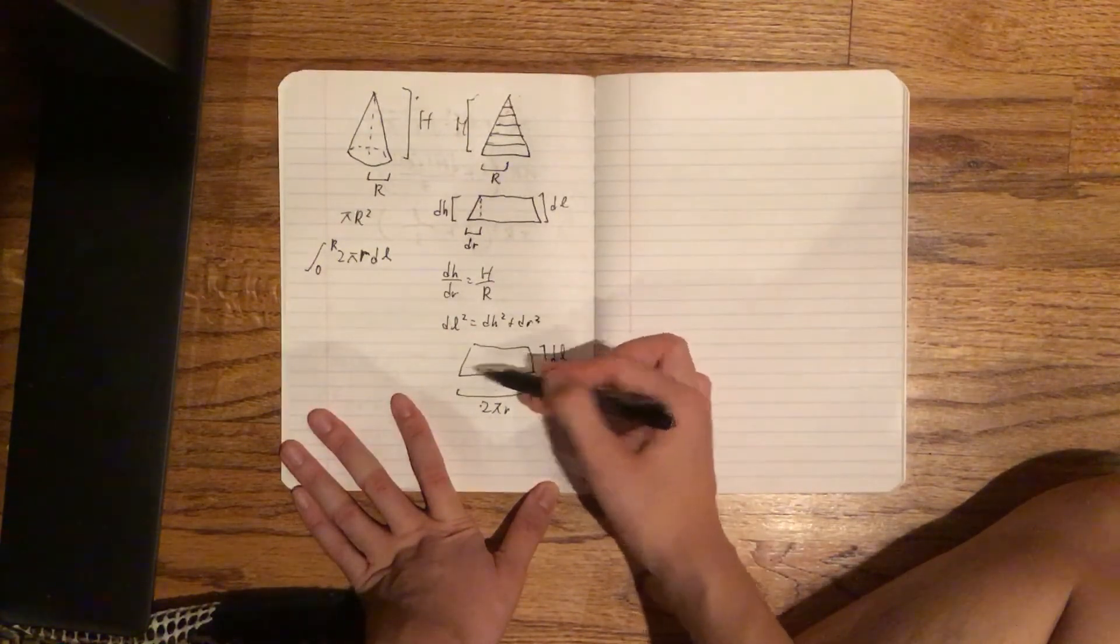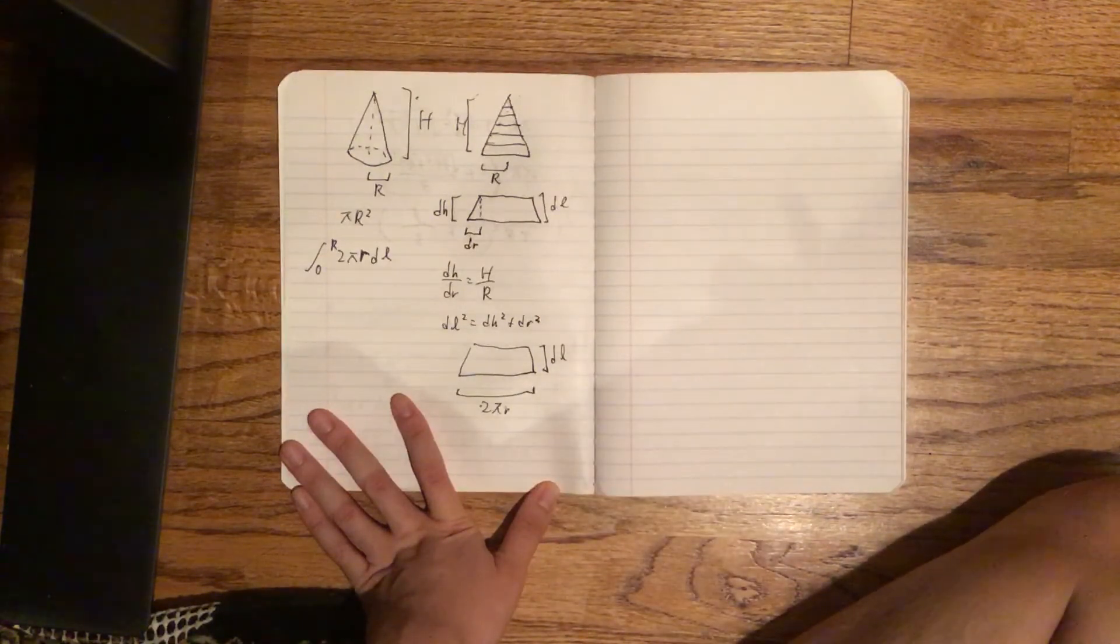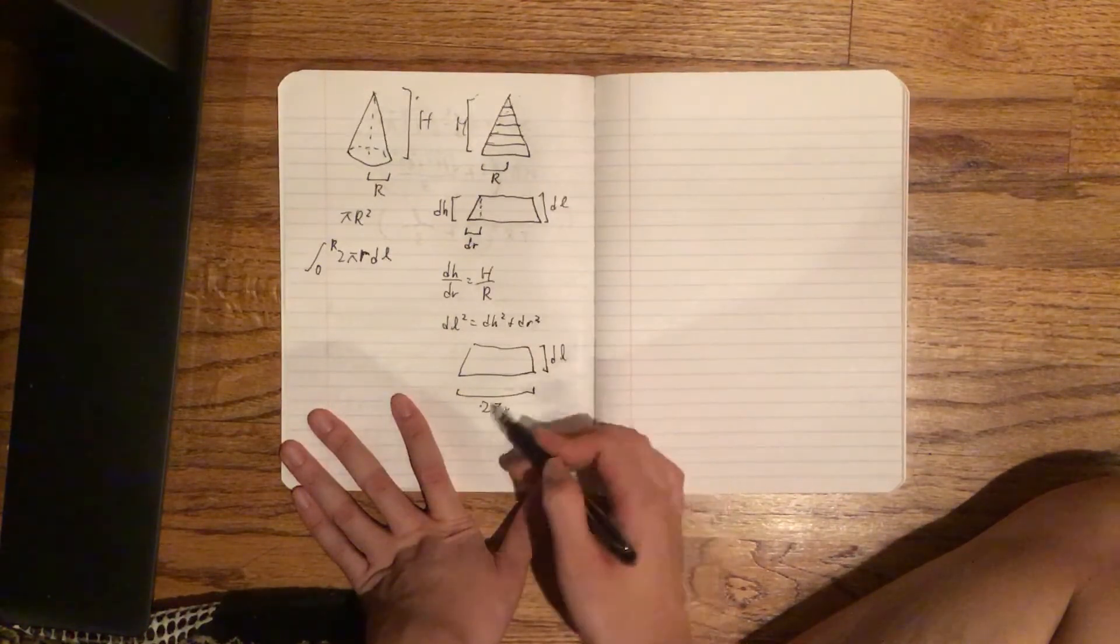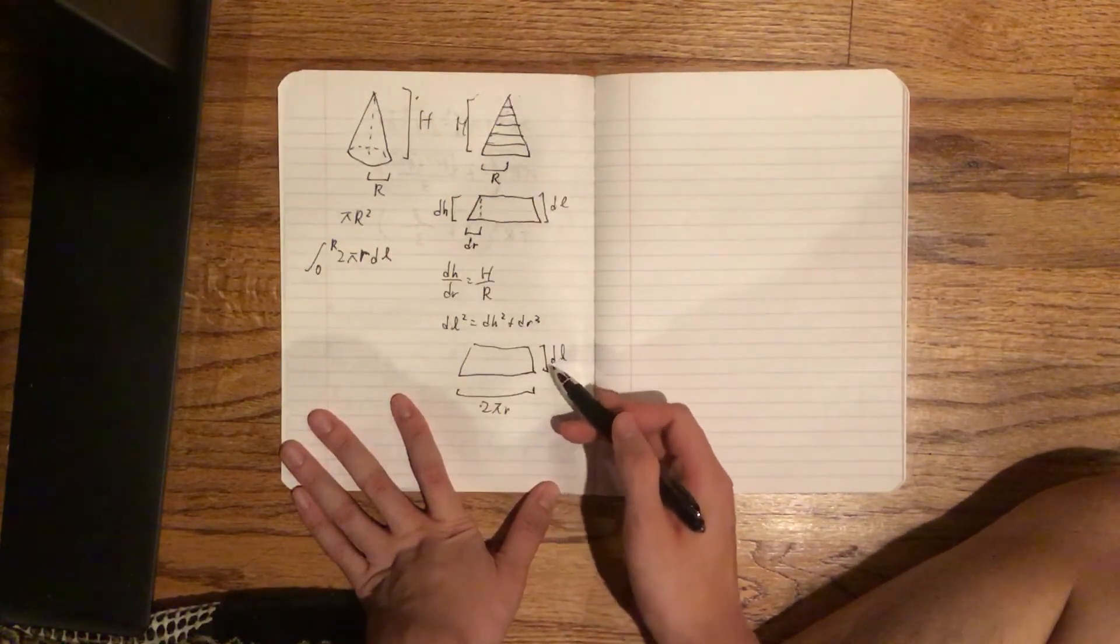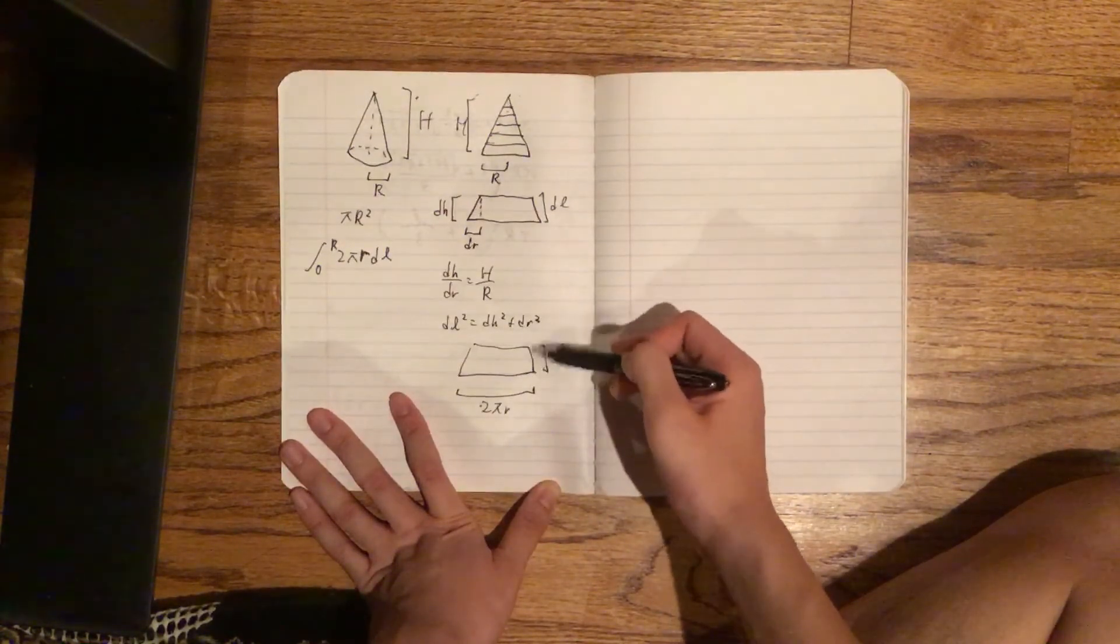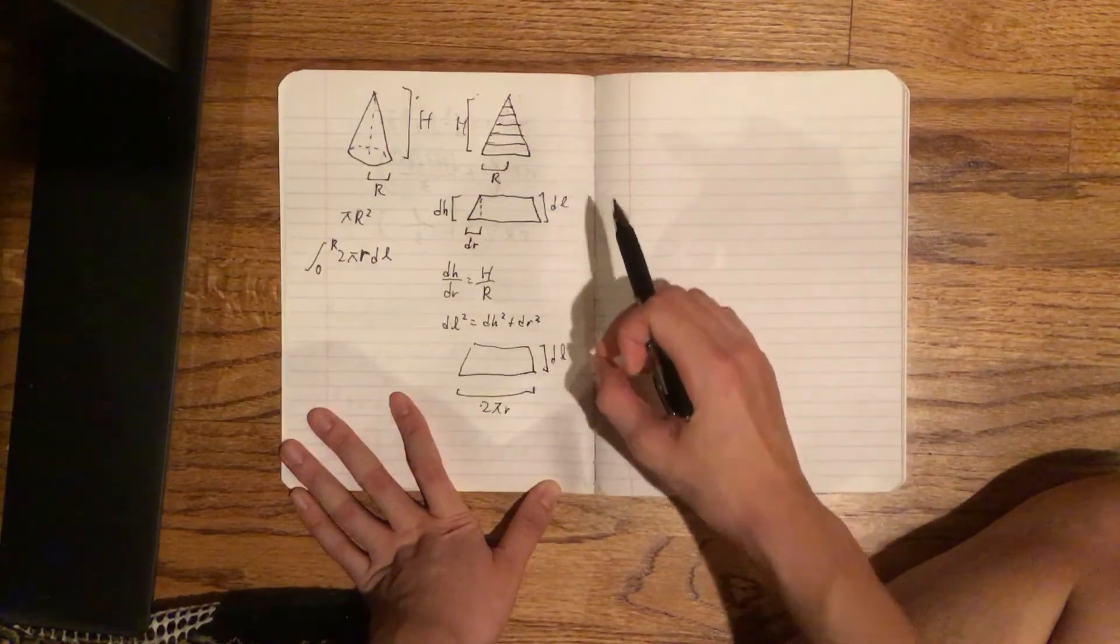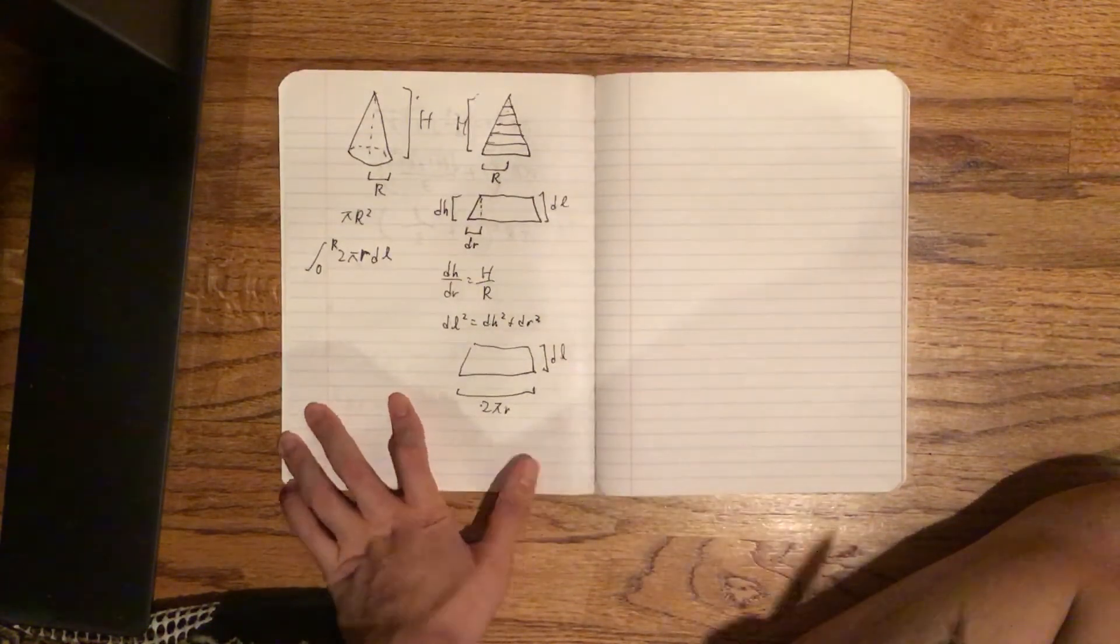As we get smaller and smaller, the better this dl will actually approximate our thing. You can almost think of this like a cylinder, but except we're using the slant height, which is not exactly perfect, but as the dl gets smaller and smaller, this becomes true.